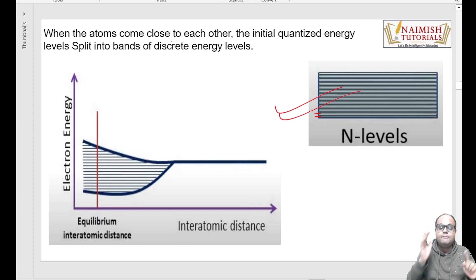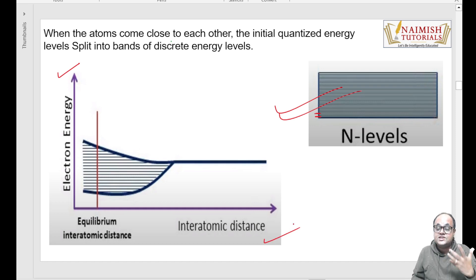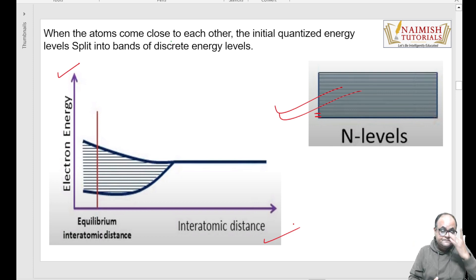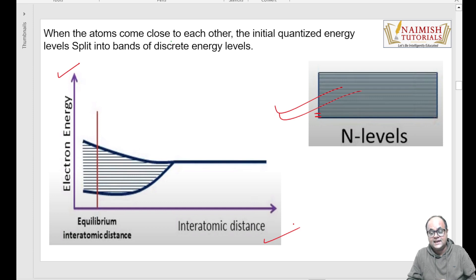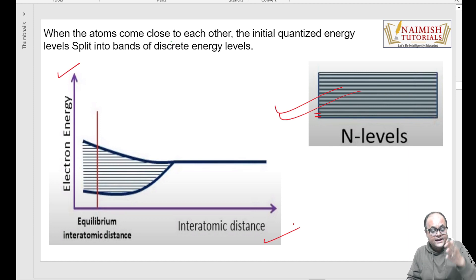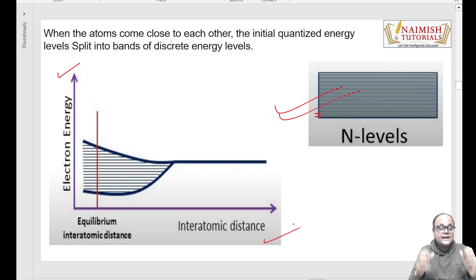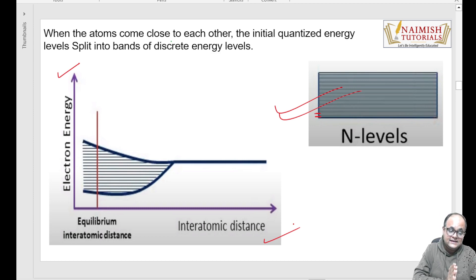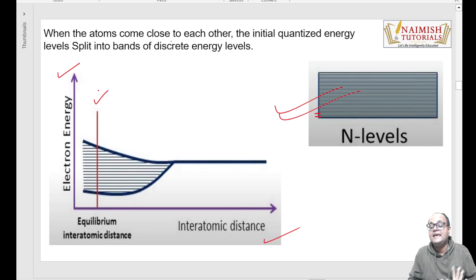Yahi hota hai hamara energy band. Ab diagram mein dekho - maine is axis par energy plot kiya hua, yahan interatomic distance plot kiya hai. Ab ek bahut common sa question aata hai ki hum interatomic distance kyun consider kar rahe hain. Toh aapko maloom hai - there is a distance of closest approach. Aisa nahi hai ki do atom bilkul ek doosre ke paas aa jaayenge. Yeh bilkul basic chemistry ka concept hai - agar aap class 12th ke student hain, toh Bohr's model mein aap dekh chuke ho distance of closest approach. Do atom ek doosre ke paas ek fixed doori tak hi aa sakte hain, usse zyada paas nahi aa sakte.